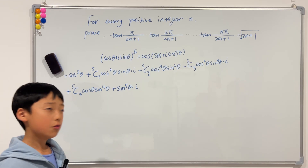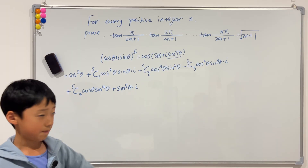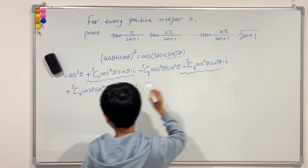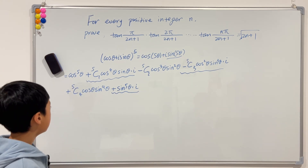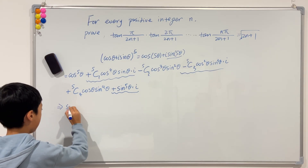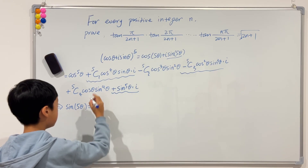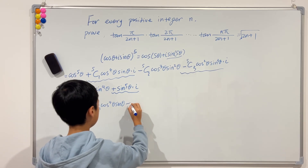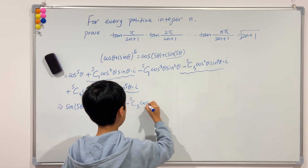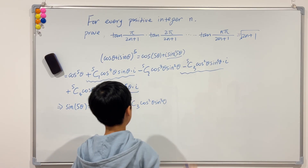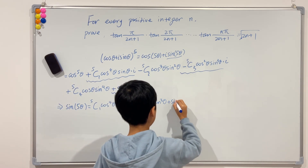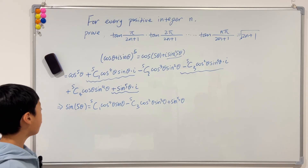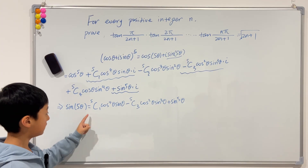We can solve for sine of 5 theta by collecting all of the imaginary terms. Don't forget the signs. So sine of 5 theta equals C(5,1) times cosine to the 4th times sine, minus C(5,3) times cosine squared times sine cubed, plus C(5,5) times sine to the 5th. Since this is an identity, it's true for all values of theta, which means the two expressions are equal.